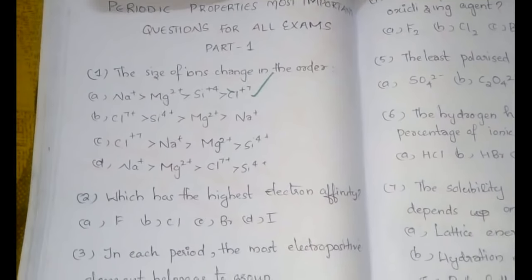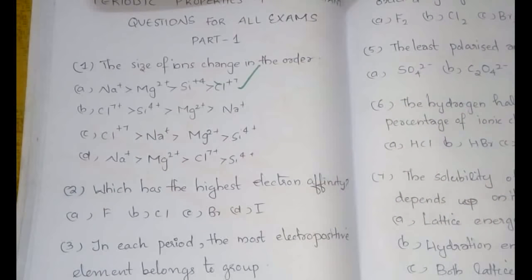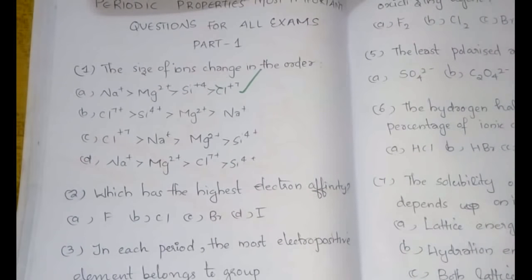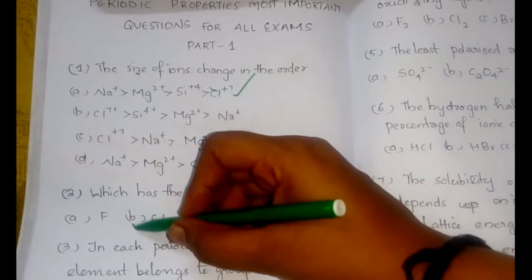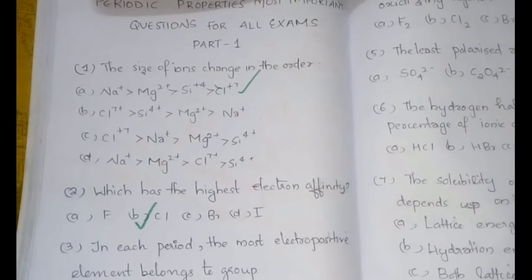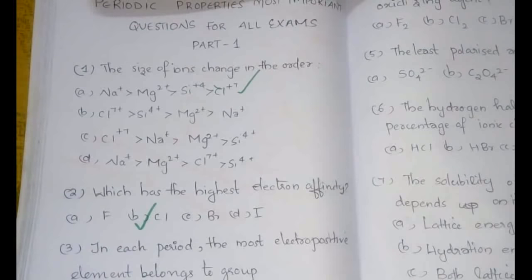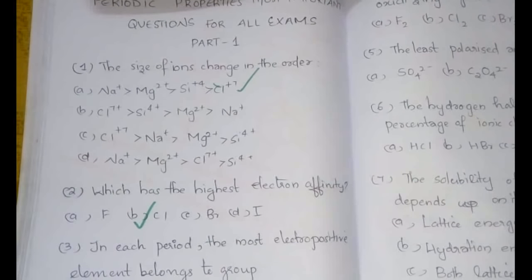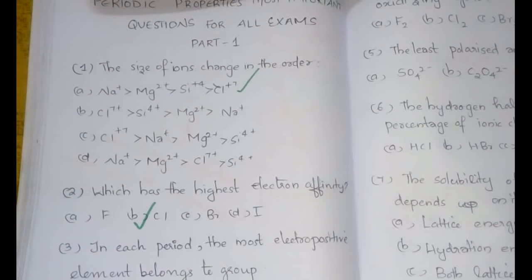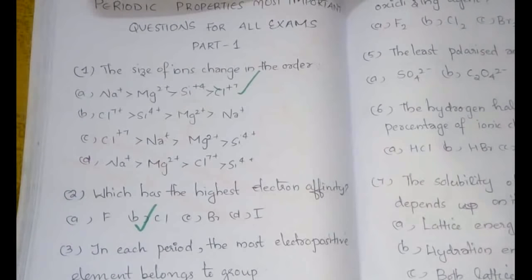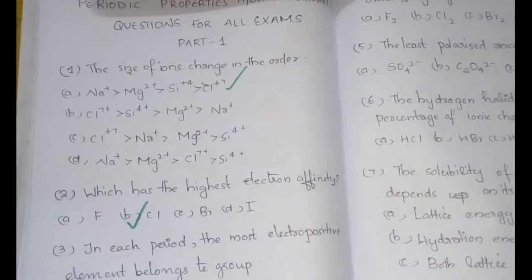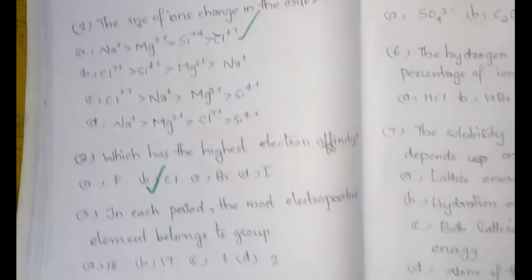The second question: which has the highest electron affinity? Electron affinity usually decreases down the group, and you would expect fluorine to have the highest, but the answer is chlorine. Fluorine has lesser electron affinity than chlorine because of its small size — a lot of electrons are present, causing repulsion between existing and incoming electrons, reducing electron affinity compared to chlorine.